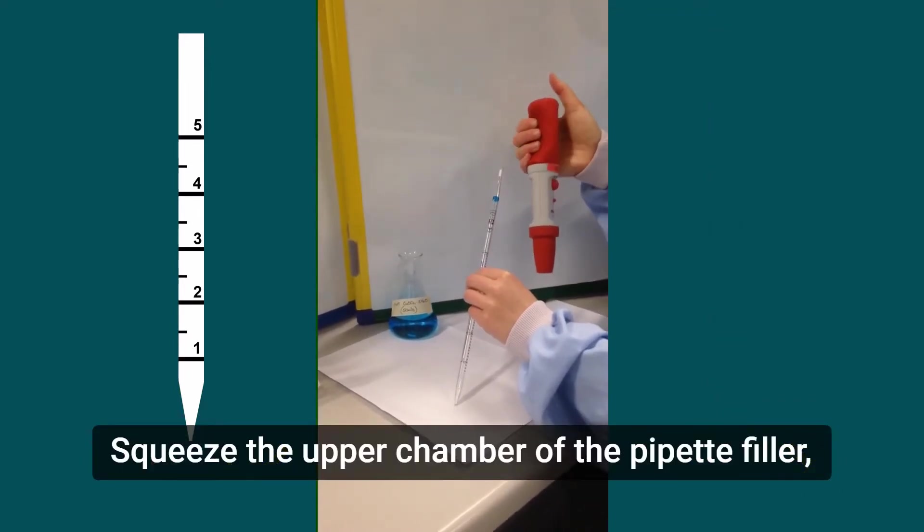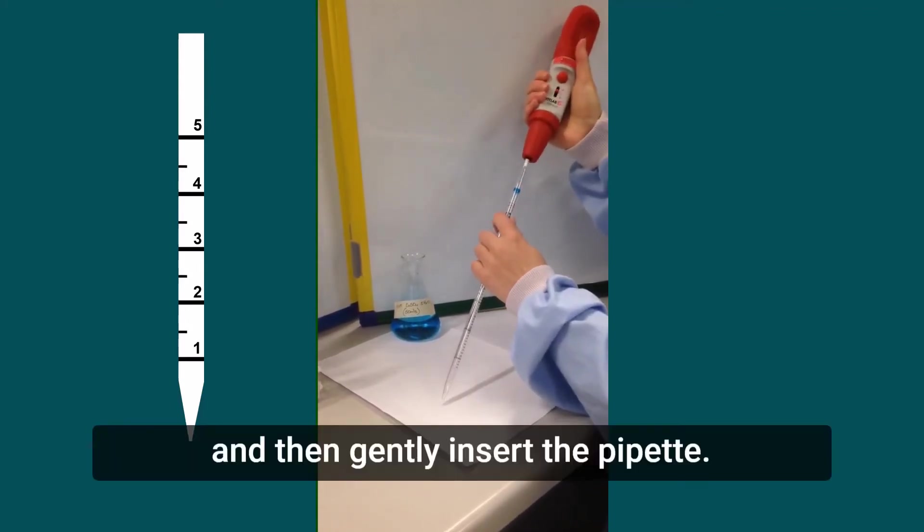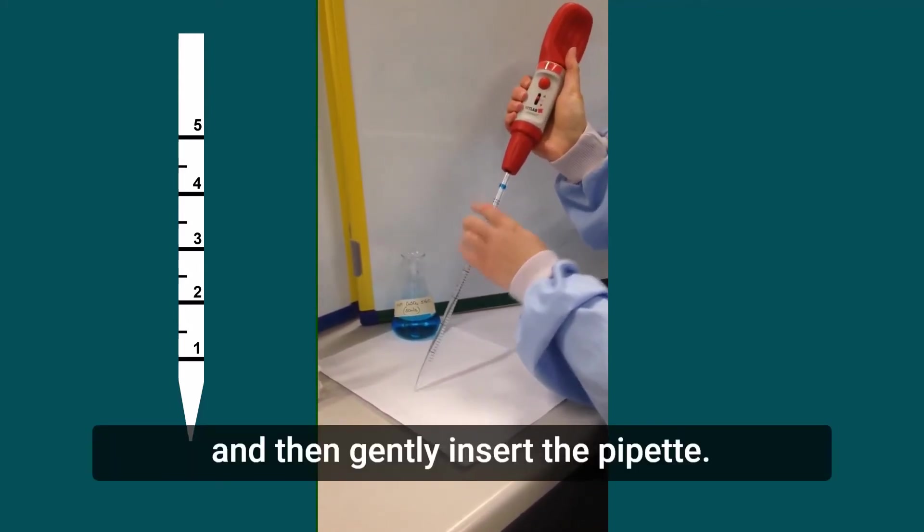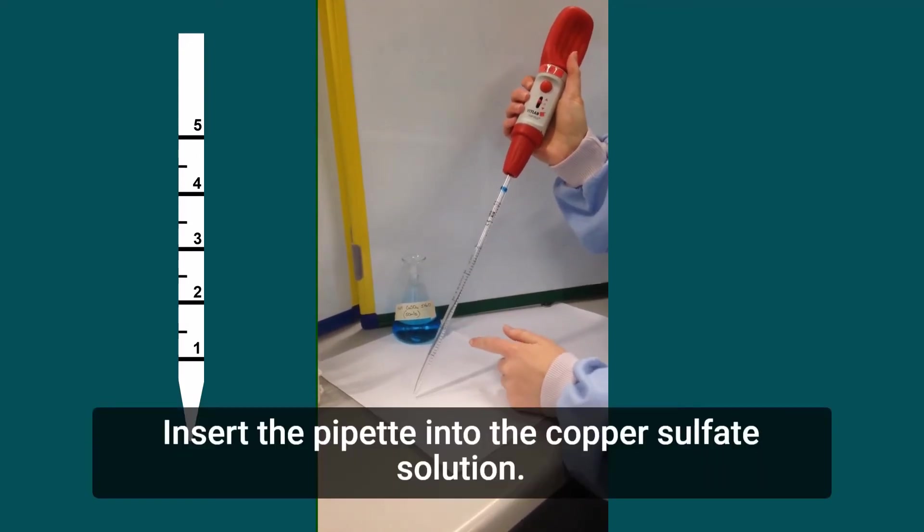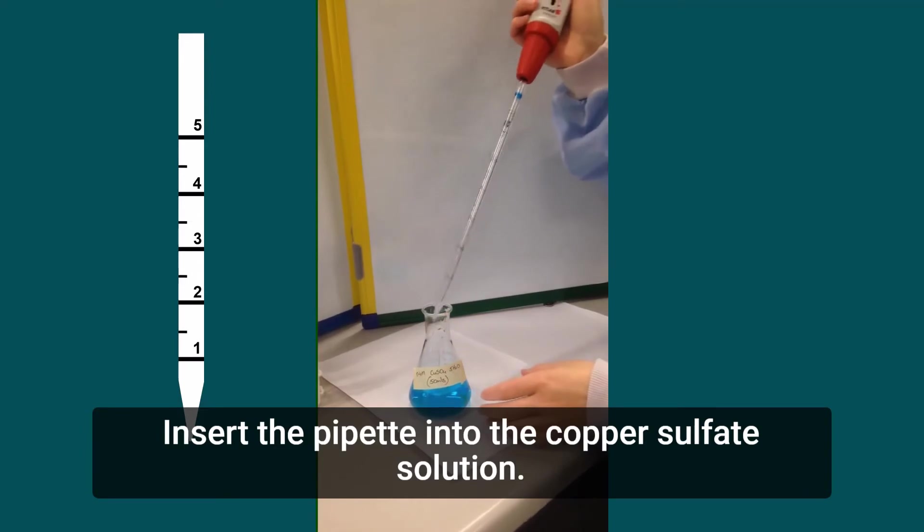Squeeze the upper chamber of the pipette filler and then gently insert the pipette. Insert the pipette into the copper sulphate solution.